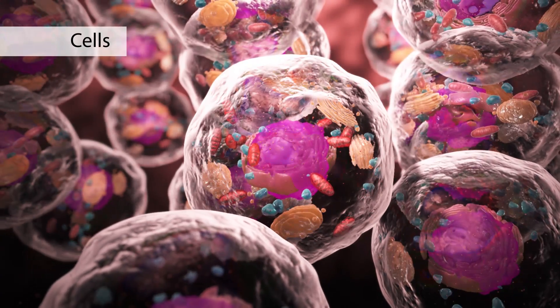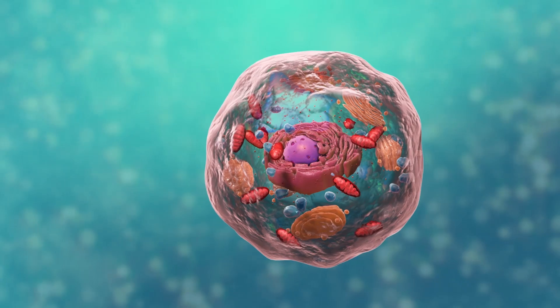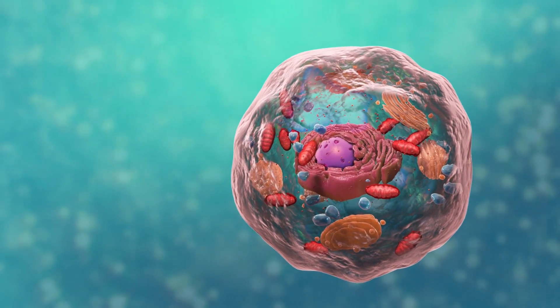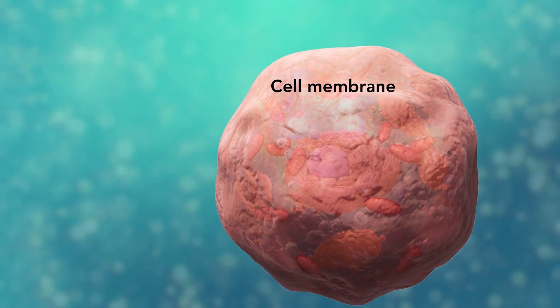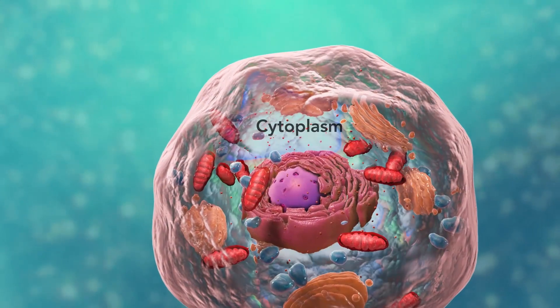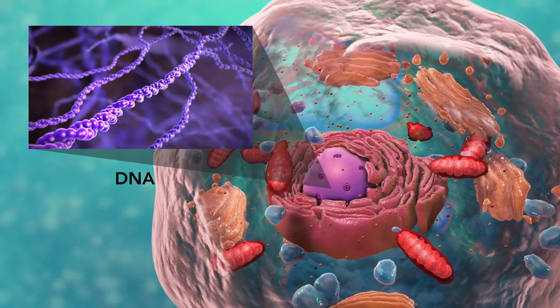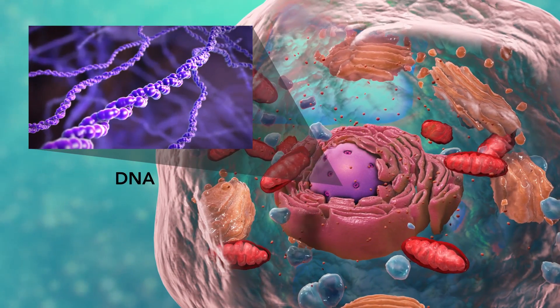You need to know that all cells have three things in common, no matter what type of cell they are. All cells have a cell membrane, which separates the inside of the cell from its environment, cytoplasm, which is a jelly-like fluid, and DNA, which is the cell's genetic material.